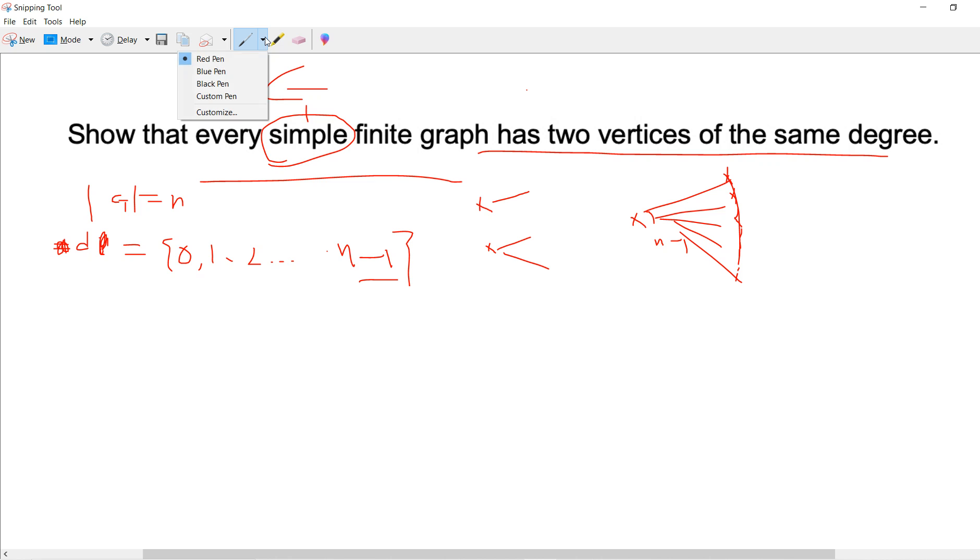But notice that one fact. The important fact is that 0 and n minus 1 cannot both exist, right? Because 0 means that there is a point which does not connect to each other, but n minus 1 means that there is a point which connected to all each other.